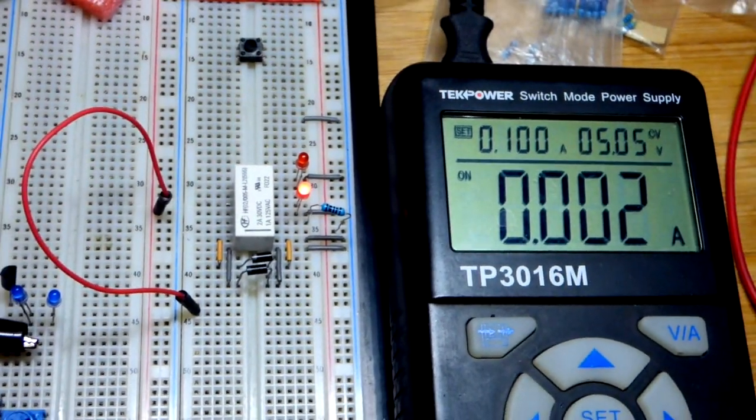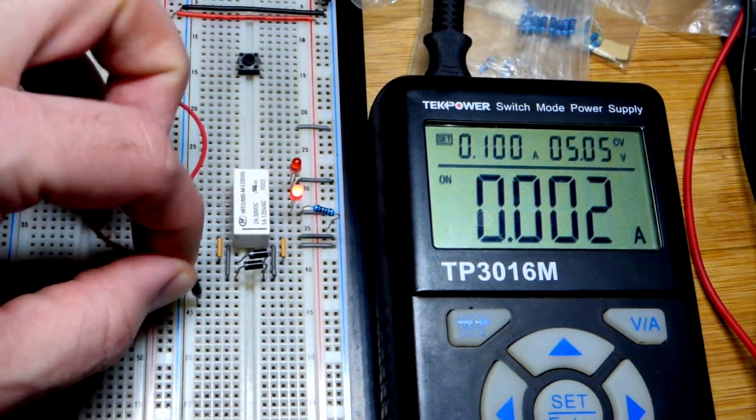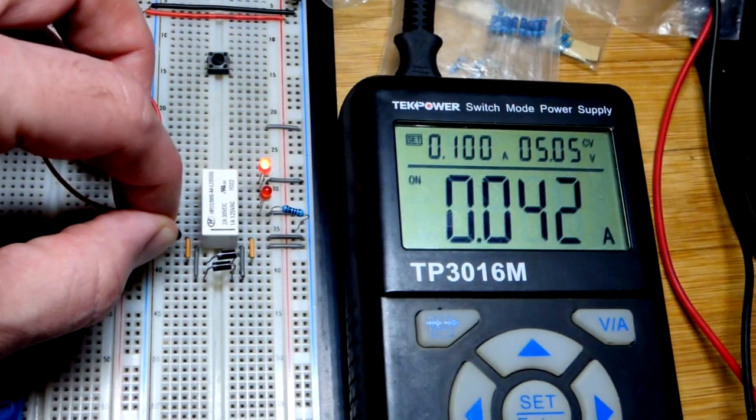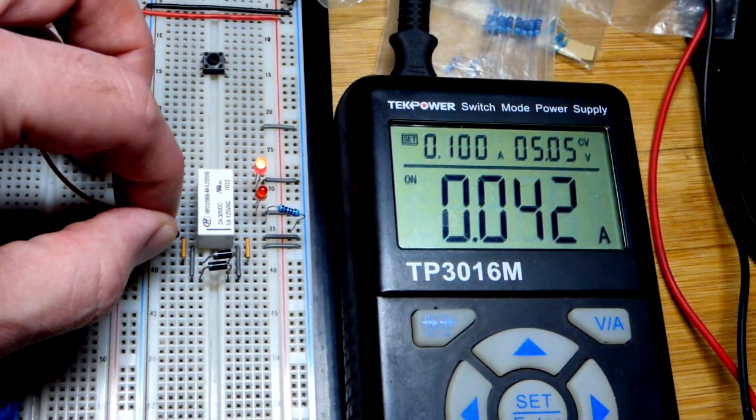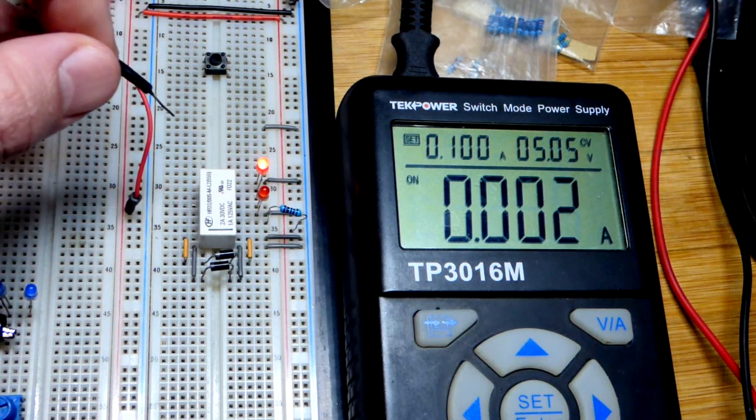So those use current, whereas this one only uses current when you're actually applying the signal. So we do need current for the LEDs, but when it comes to the relays, so we will switch it right there. You can see as long as I'm holding the jumper there, it's showing about 40 milliamps of current right there. I remove it, now it's down to about two.